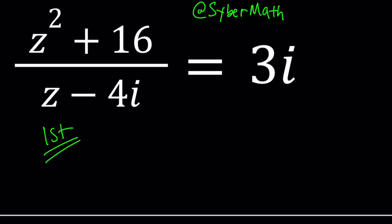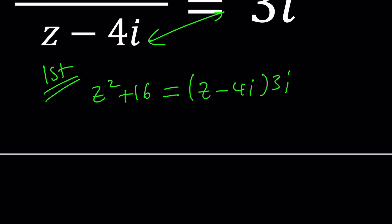All right, so first method, cross multiplication, because why not? z squared plus 16 is equal to, by the way, that's how I make my z, so I can distinguish between z's and 2's because my 2's kind of look like z's sometimes. We're going to go ahead and distribute here, distribute like multiply these two things. z squared plus 16 equals z times 3i. I can write as 3iz minus 4 times 3, 12i squared.